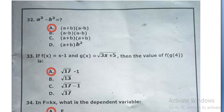If f of x is equal to x minus 1 and g of x is equal to square root 3x plus 5, then the value of f into g of 4 is square root 17 minus 1, option A.